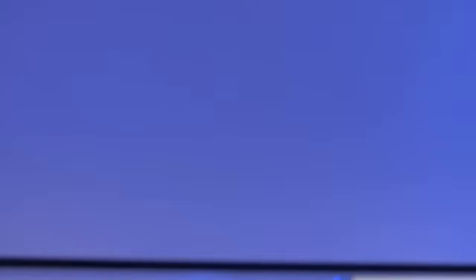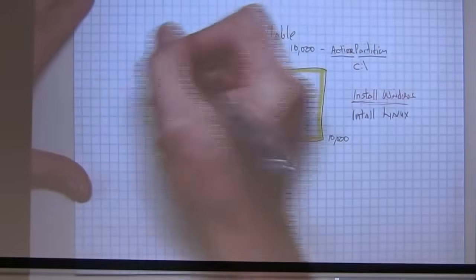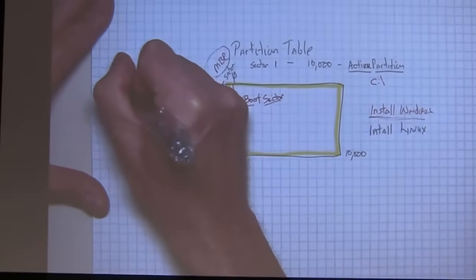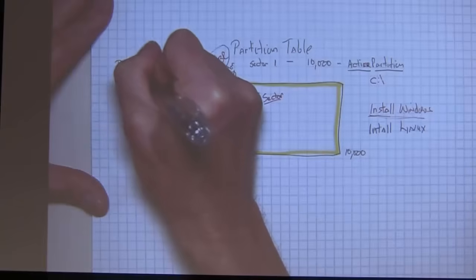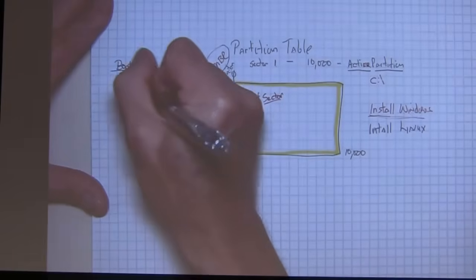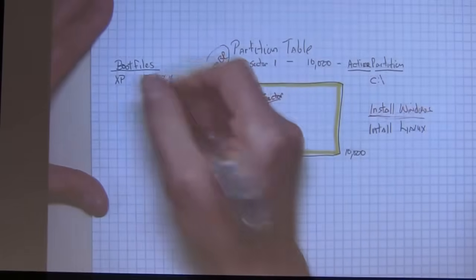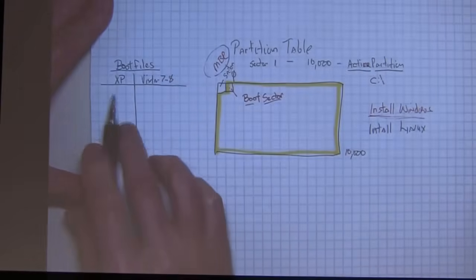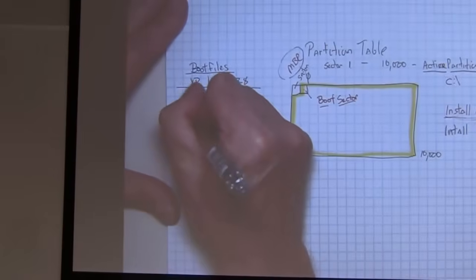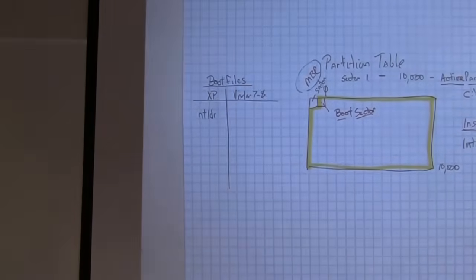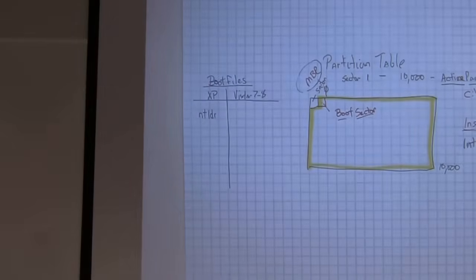With Windows XP, these are the files that boot the operating system. The first file that boots the operating system for XP is called NTLDR. No extension. That's the name of the file, right there. NT-Loader. It's not .doc, it's not .executable. It has no extension.